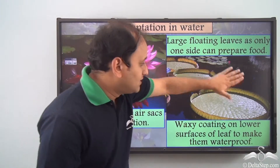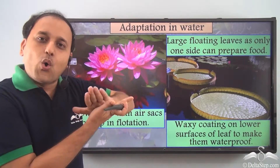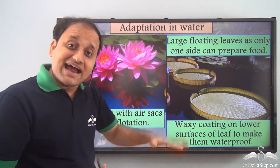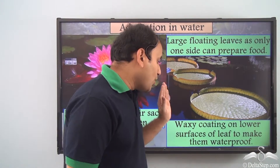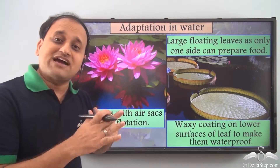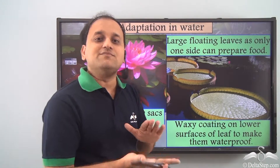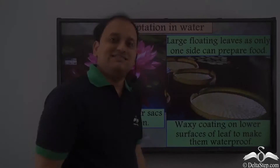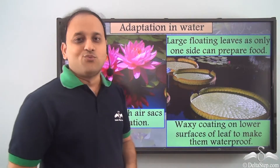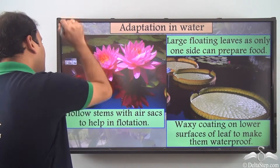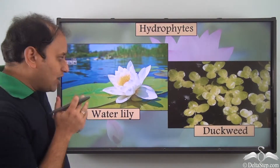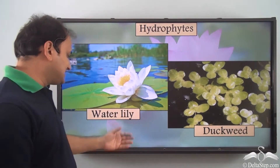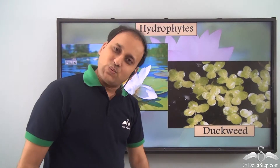Water plants also have a waxy coating on the lower surfaces of the leaf to make them waterproof. The leaves are on the water surface, so the lower portion is completely in contact with water, and that portion has a waxy coating so that it becomes waterproof. As a result, these leaves do not decay easily when constantly in contact with water. Such plants which survive in water are called hydrophytes. Some examples are water lily and duckweed.